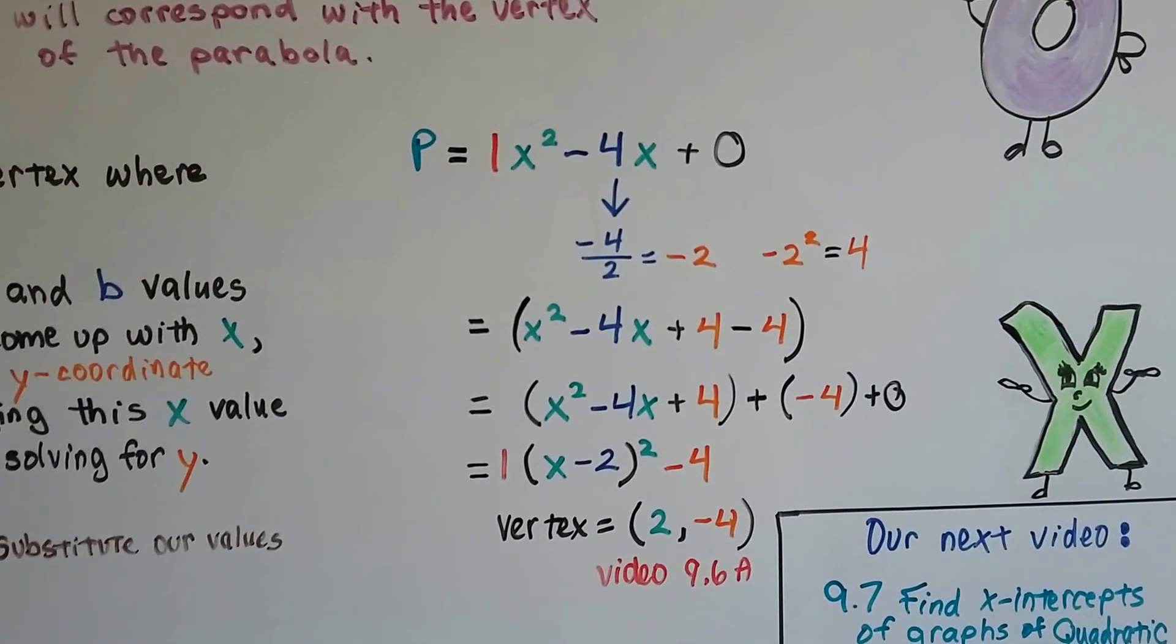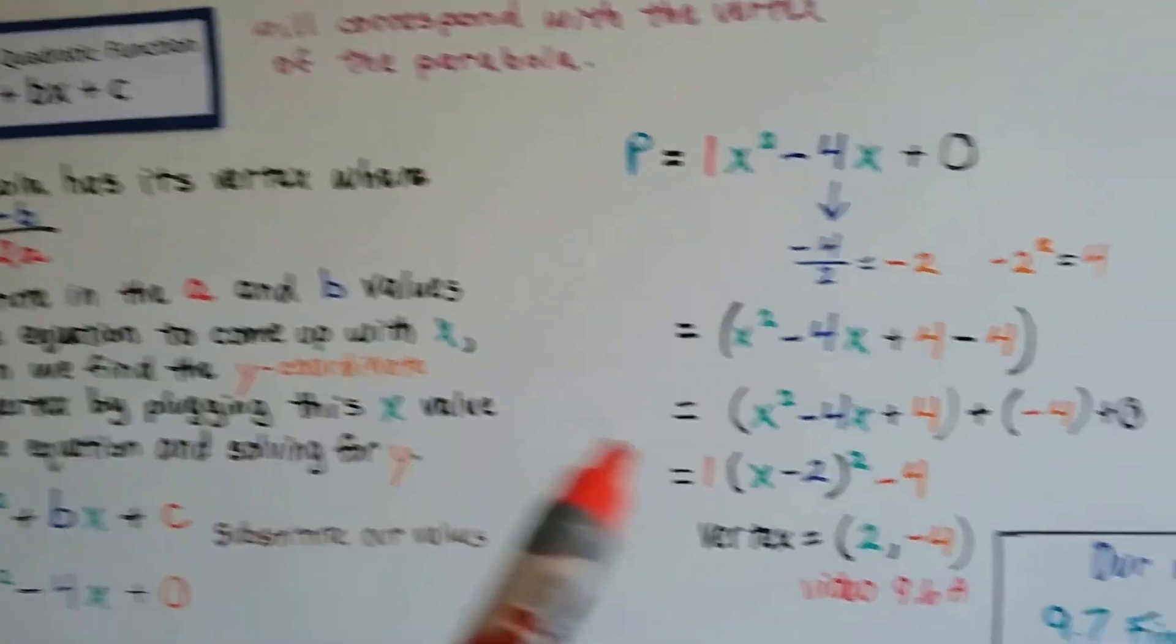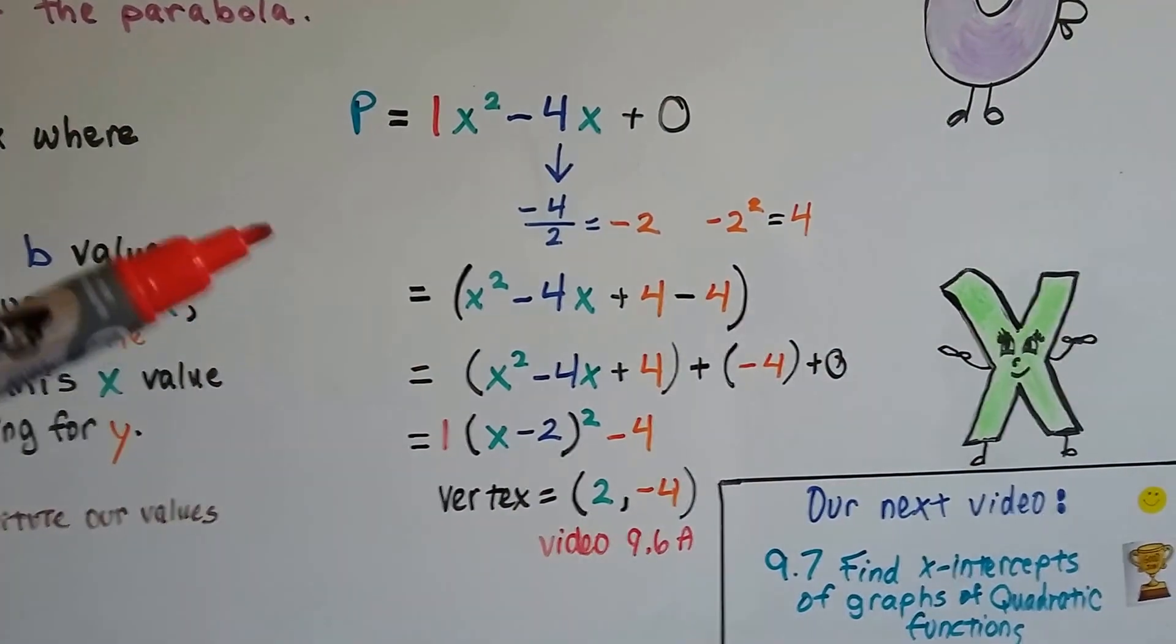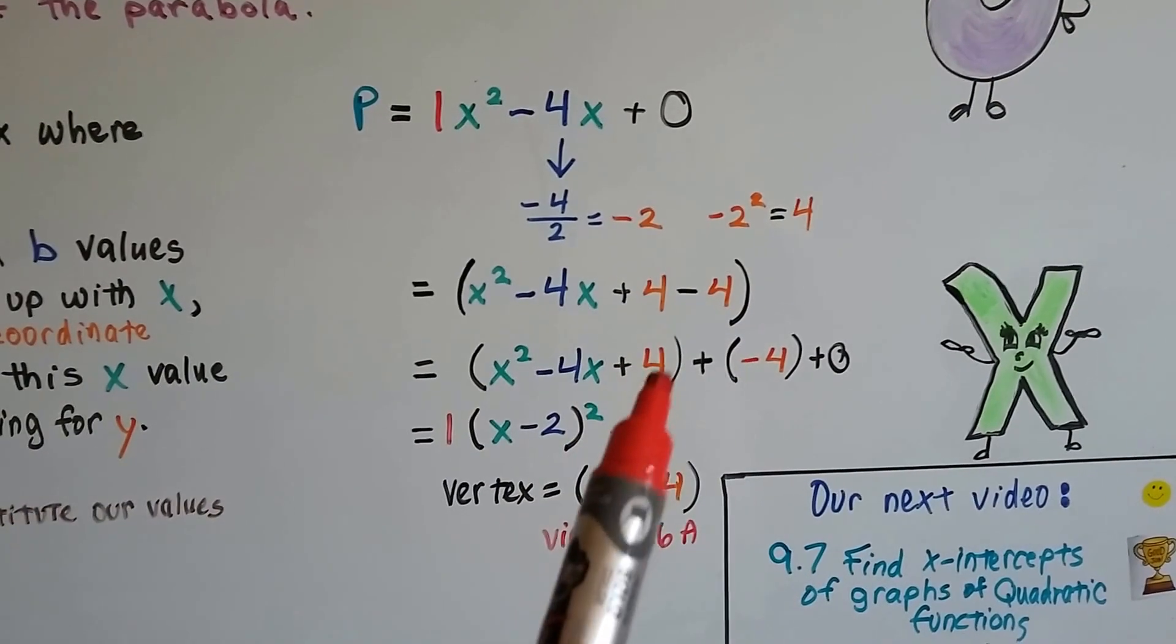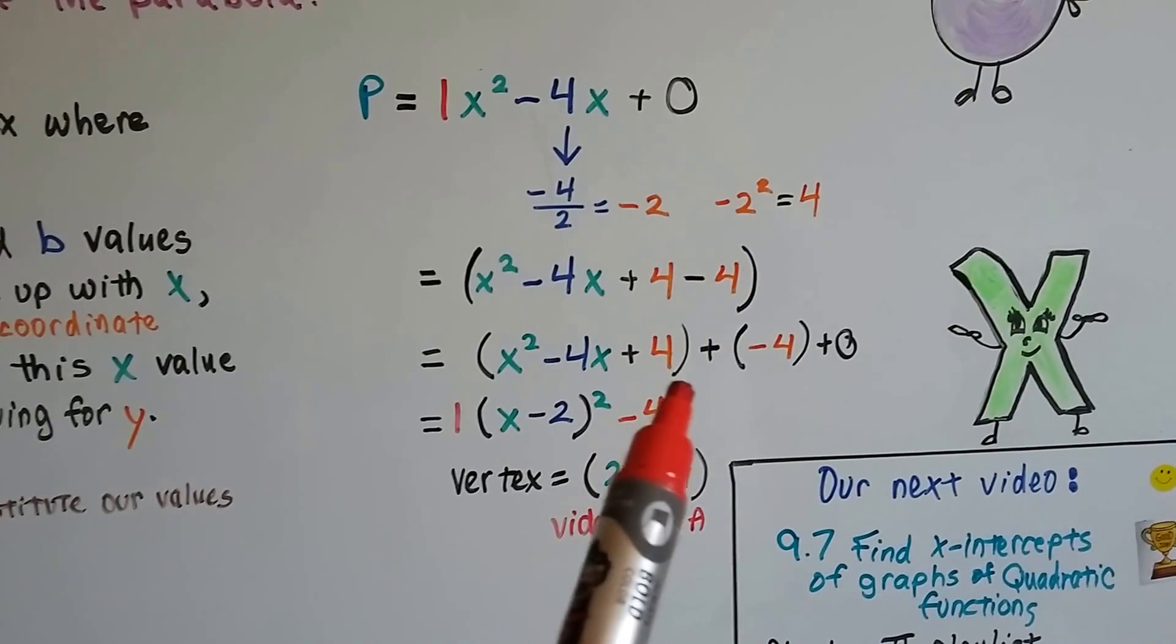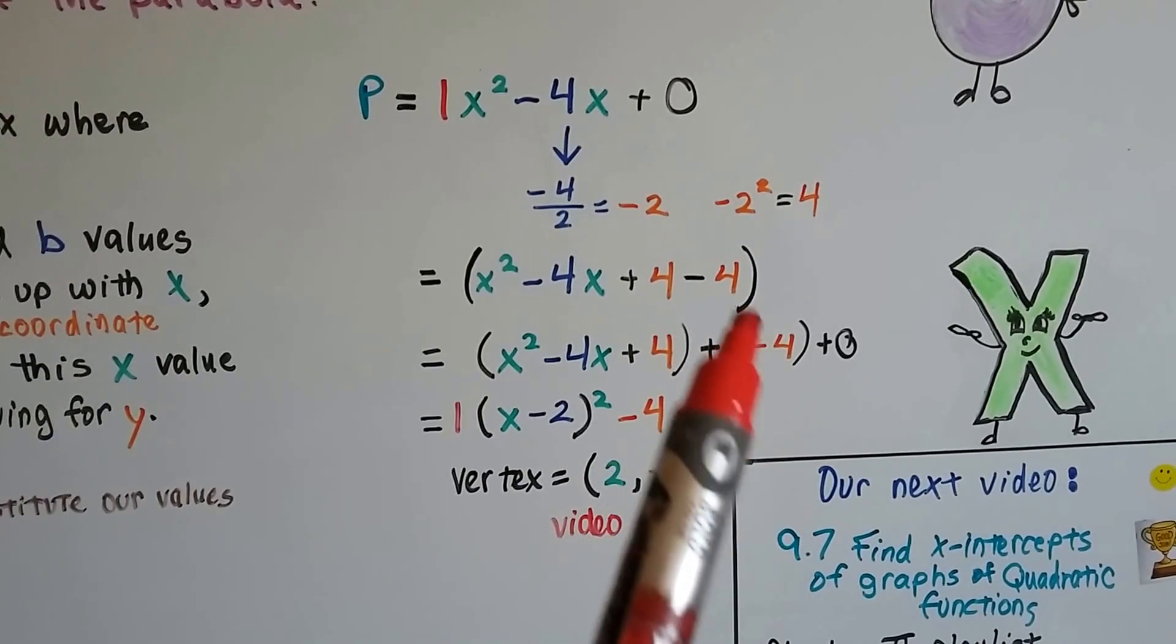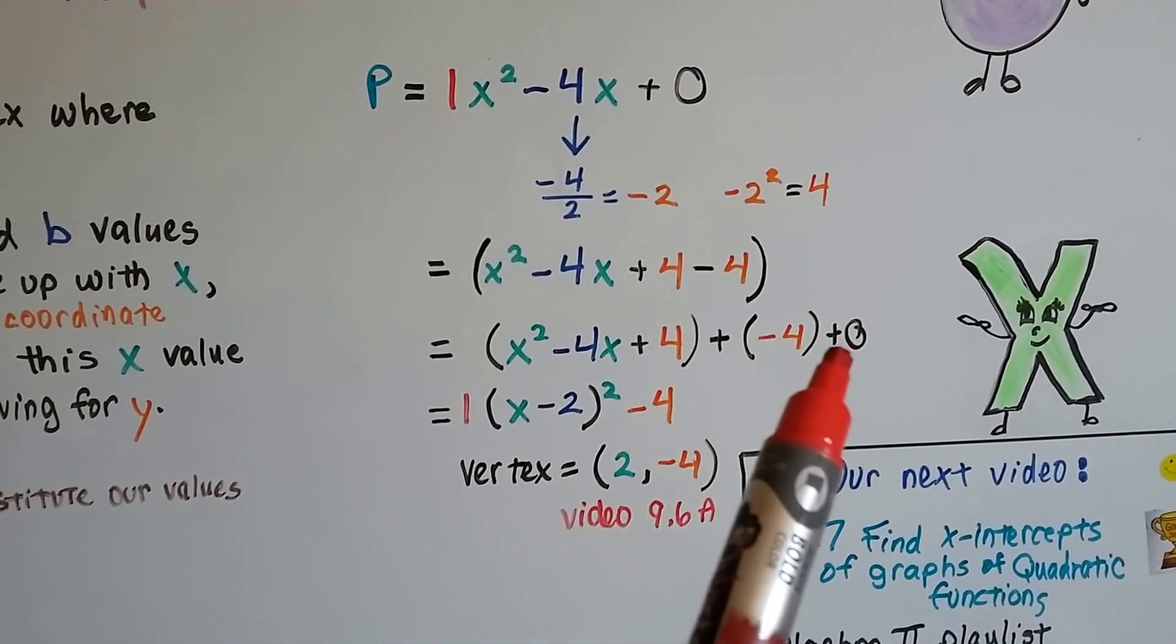We write this into parentheses like this, and we do the +4 -4. If you're confused, this is what we did in video 9.6a, and I'm going to show you a different way in a second. I'm just trying to show you how we did it before. We did +4 -4, then closed our parentheses after this +4, and added this -4 + 0.